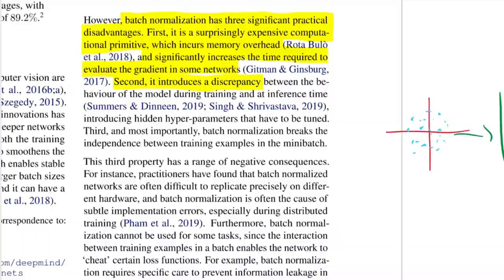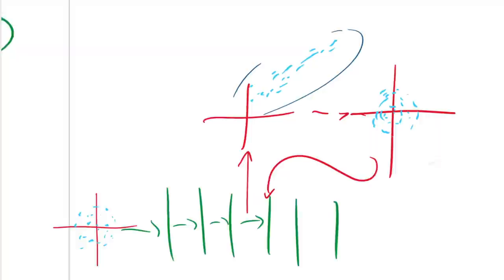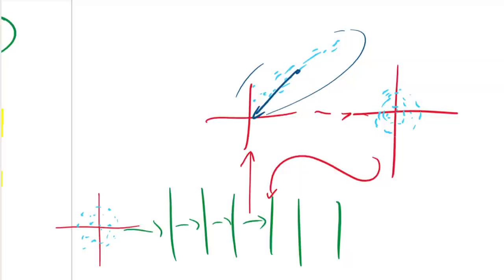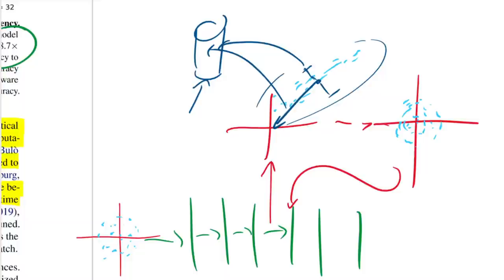Second, batch normalization introduces a discrepancy between the behavior of the model during training and at inference time. At inference time, you don't want batch dependence — you want to feed a single data point and get the same result regardless of other data. People handle this by maintaining a buffer of mean shifts and scalings during training, then using a moving average over training data at test time — creating a discrepancy between training, which looks at the current batch, and inference, which looks at the average over recent batches.